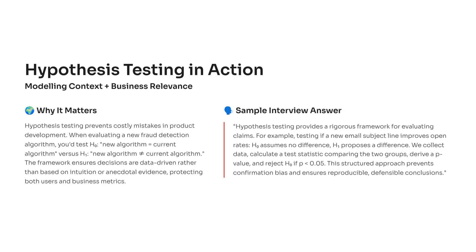You set your hypotheses like this: the null hypothesis says the new algorithm performs the same as the current one. The alternative hypothesis says it performs differently — hopefully better.